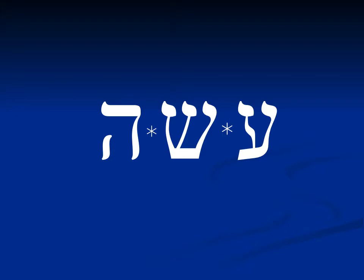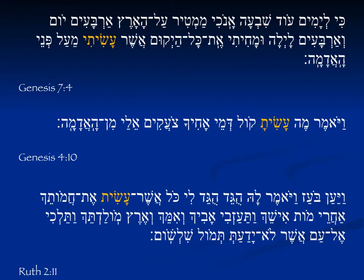Now we'll look at the lamed-he verb 'asah,' meaning 'to make' or 'to do.' Here we have some pretty radical changes in the form. Remember that in the present tense there is a slight vowel shift for the feminine, and in the plural we lose the he altogether. That's what's happening here — we lose the he altogether, but we get an extra yud. In Genesis 7:4: 'Asiti' — there's no he, there's no patah under the second letter like in 'shamarti' — it becomes the yud form. 'Asiti' — which I did, or which I made — God speaking about His creation.